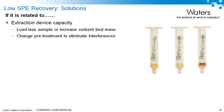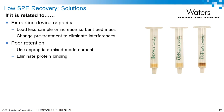Let's talk about each one of these problems and some potential solutions in more detail. For device capacity, one obvious solution is to load less sample or increase the bed mass. Another solution is to change the pretreatment — for example, if you do a precipitation prior to SPE, you can eliminate high abundance proteins, effectively increasing your capacity for the analytes of interest.